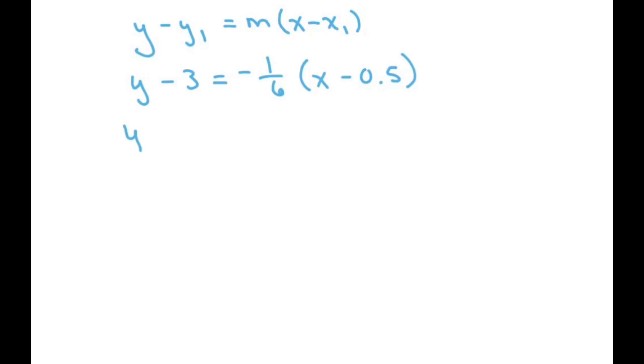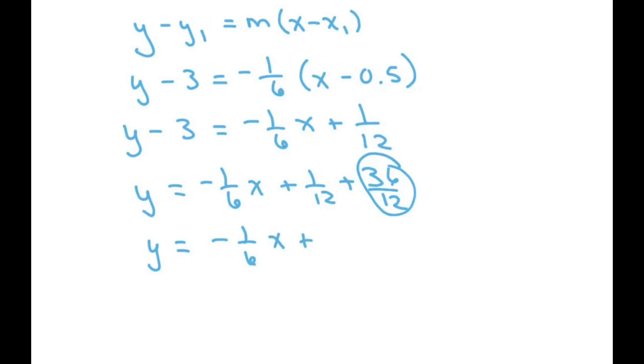So I'll clean that up. You get y minus 3 equals negative 1/6 x plus 1/12. And then solve for y. So you add the 3 to both sides, and that's going to give you y equals negative 1/6 x. And this would be 36 over 12, that's a 3, so that's going to give you 37 over 12.